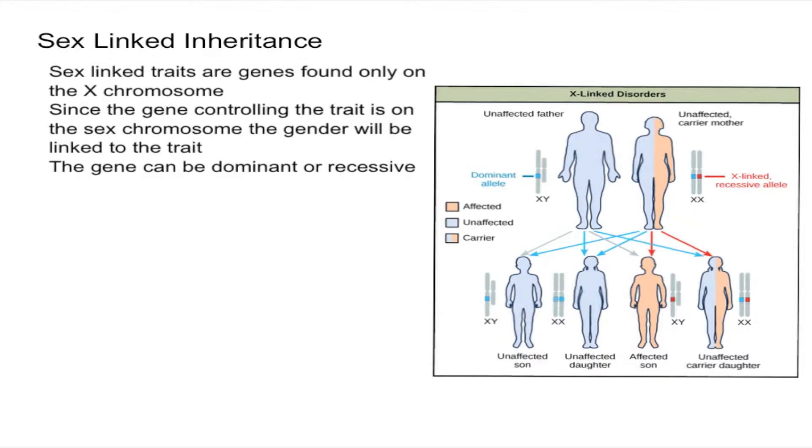Usually an example will help. The most common example is color blindness. Let's take a look at this diagram right here. Color blindness, or a specific type of color blindness, RG color blindness, is a recessive X-linked trait.